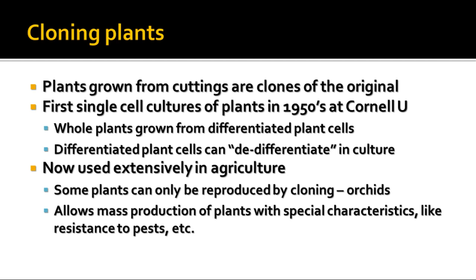There are some plants that can only be reproduced by cloning, like orchids and bananas. Single-cell cloning allows for mass production of plants that have special characteristics, things like resistance to pests or special nutritional additions and things like that. So it's used quite a bit.